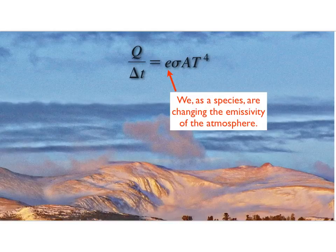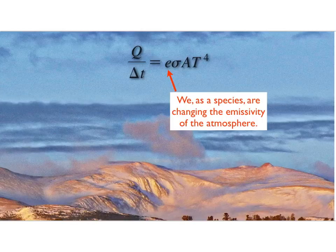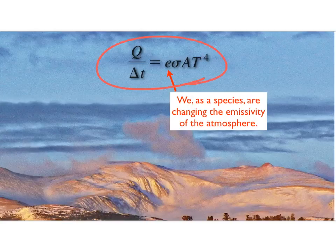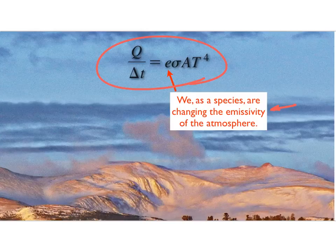We are putting extra carbon dioxide in the atmosphere because we're burning fossil fuels, and as a consequence we are changing the radiation balance of the atmosphere. This is not a subject of modeling or theory — this is absolutely true. We as a species are actually changing the emissivity of the atmosphere. We have made measurable changes in the radiative properties of the Earth — we have changed that constant. We are altering the fundamental dynamics of energy exchange in the Earth's atmosphere, and it is measurable.